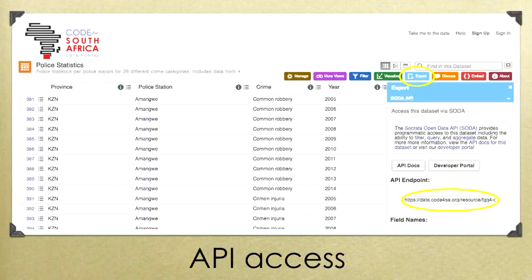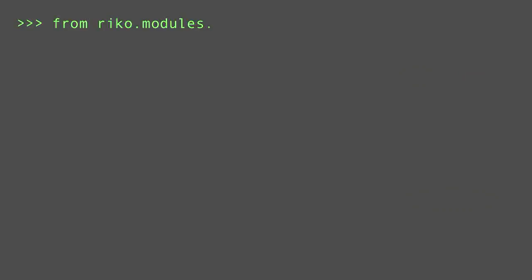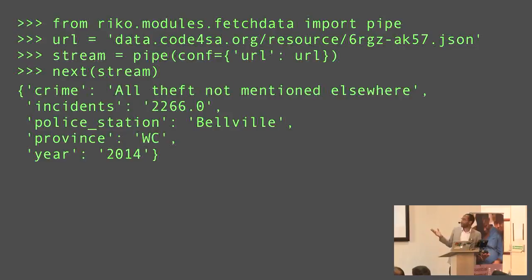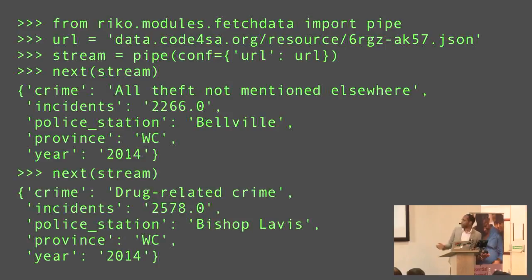You'll see that you pass the URL — it's a path to a JSON file. We're not going to be doing any chaining, so we're just going to import the fetch data module directly. As before, you have a URL that you pass into the configuration, and when you call the pipe function, you get back a stream. When you call next on the stream, this is the first data item. In this data set, they classify all the crime that happened in South Africa, attribute it to a police station, and give the number of incidents and province. If you call next again, you get the next item.